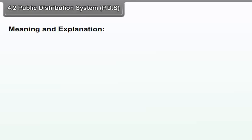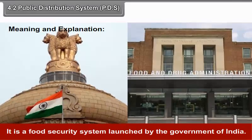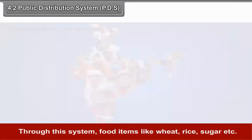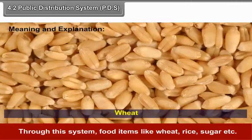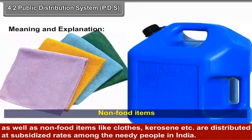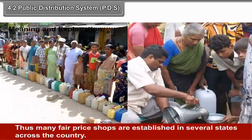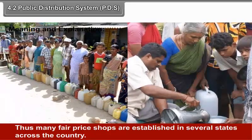4.2 Public Distribution System - Meaning and Explanation. It is a food security system launched by the Government of India. Through this system, food items like wheat, rice, sugar, etc., as well as non-food items like clothes, kerosene, etc., are distributed at subsidized rates among the needy people in India. Many fair price shops are established in several states across the country.